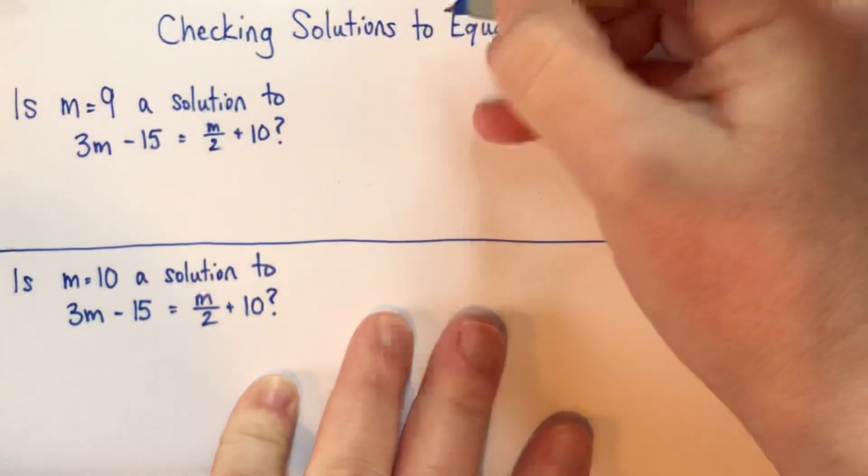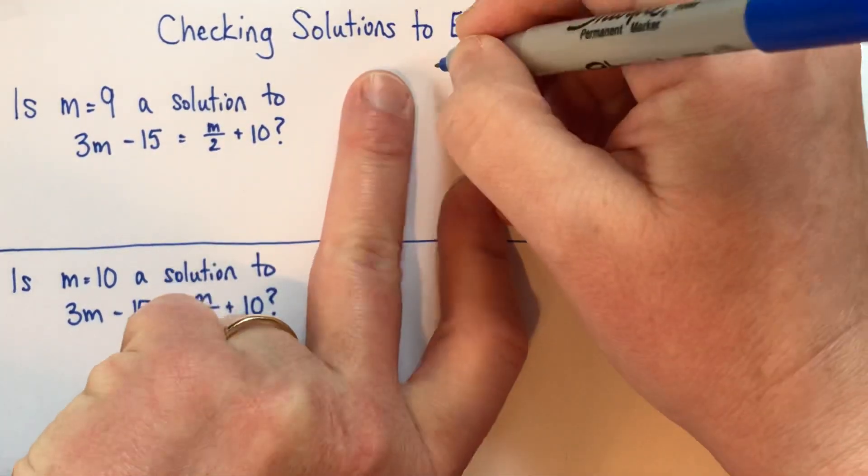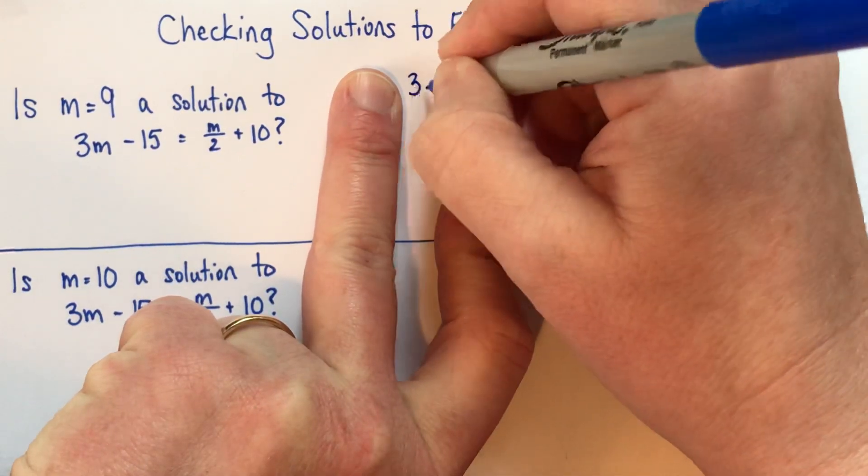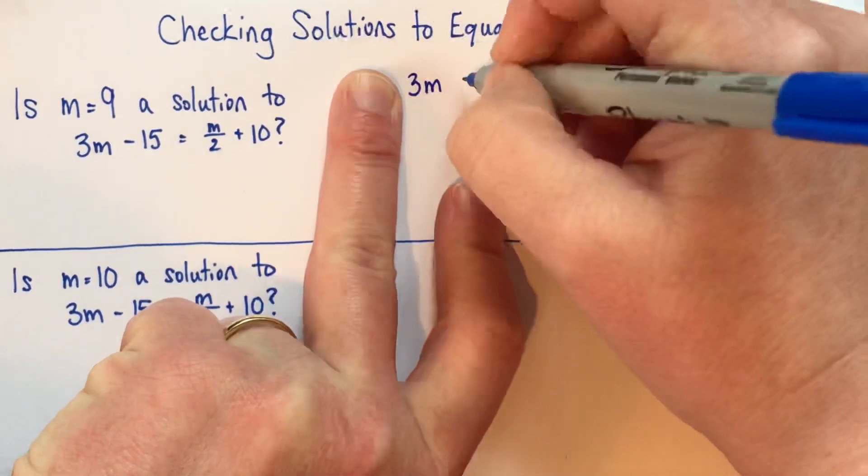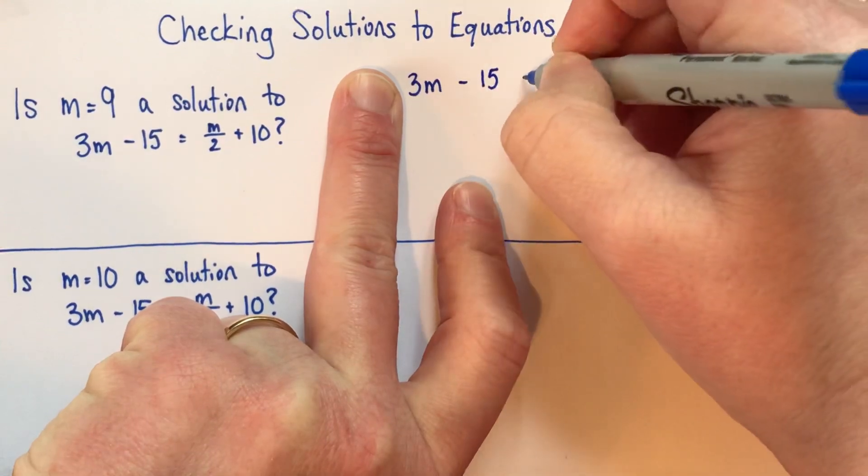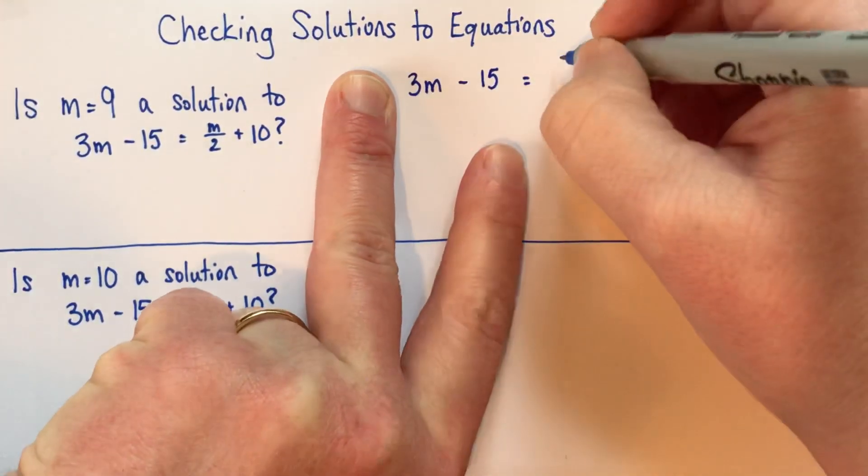Okay, so what some people sometimes do is they copy down the equation. So remember, 3m is 3 times m. If there's no operation written, it's multiplication.